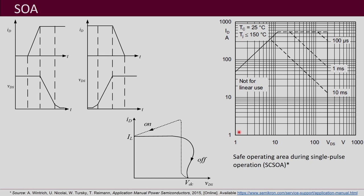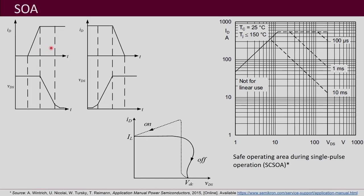Now we will discuss another important term given in the data sheet — a graph called the safe operating area (SOA). Before that, let us recall the turn-on and turn-off characteristics seen before. This is your drain current and this is your drain-to-source voltage, and we had observed that during these two intervals both drain current and drain-to-source voltage are high simultaneously.